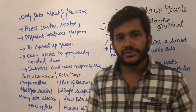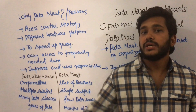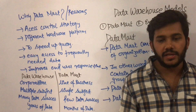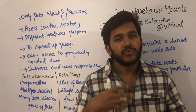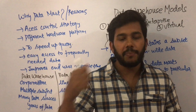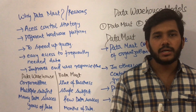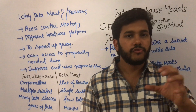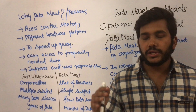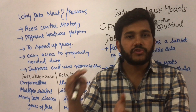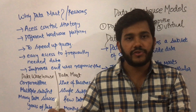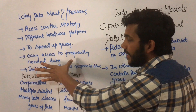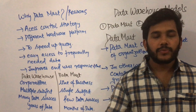The third reason is to speed up queries. Since you divide the data based on subsets or subjects, if you fire any query for a result the speed will increase. Suppose you want to find the total number of placements from the computer science department. Without data mart, there are around 10,000 students in the college and out of those, suppose 50 from computer science got placed. If you search from just a data mart of computer science, the query result will be fast because the number of results to be searched is very less.